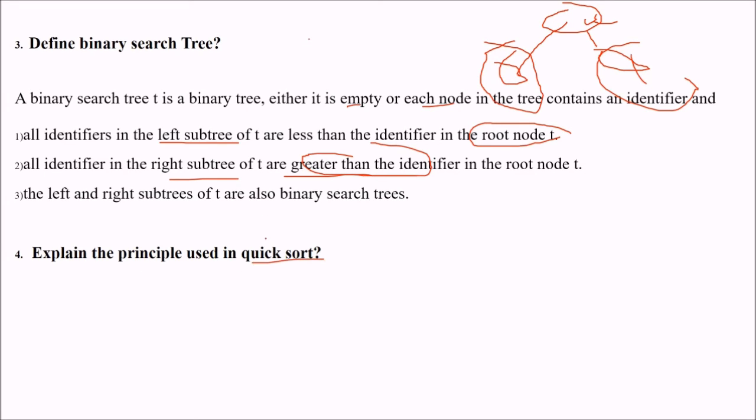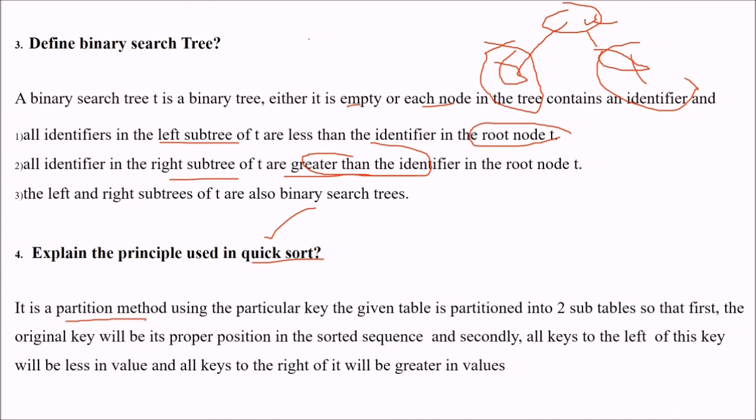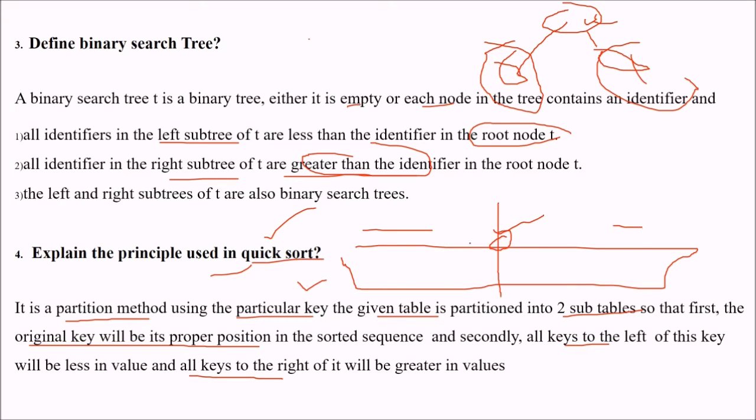Explain the principle using quick sort. This is a classical example of algorithm analysis, a partition method. Using a particular key, the given table or values is partitioned into two sub-tables so that the original key will be in its proper position in the sorted sequence. All keys to the left of this key will be less in value and all keys to the right will be greater in values. We partition these values, not necessarily n by 2. We partition the input element in such a way that the left values are less than this value, right values are greater than this value. But these values are not necessarily ordered because this is the task of quicksort to order them.